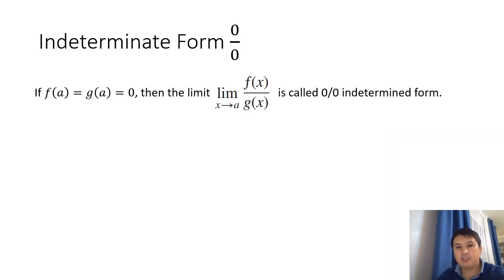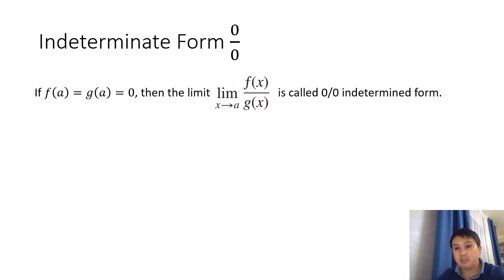So why do we care about indeterminate forms? Often when we take limits — like the limit as x goes to a of f(x) over g(x) — if f(a) and g(a) are both 0, then we get a 0/0 situation. That's what we call an indeterminate form, and in this section we will discuss how to handle such indeterminate forms.